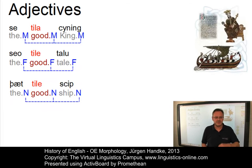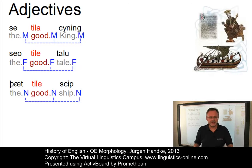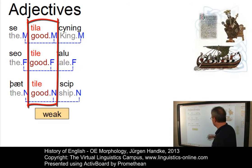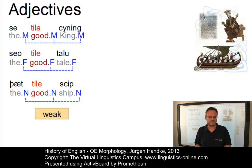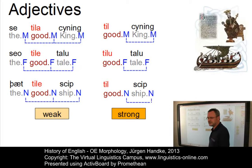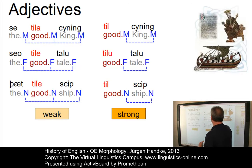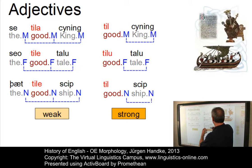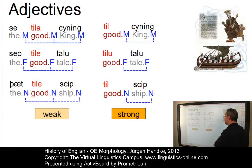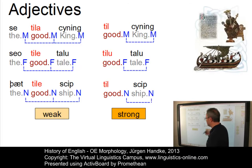Furthermore, adjectives can also take comparative and superlative endings. And this is the most remarkable thing in Old English: adjectives preserve the Germanic principle of two separate declensions. The so-called weak declension, where the adjective occurs in the context of a determiner. And then there is the so-called strong declension, where adjectives can occur without determiners, and then special forms have to be used. So 'se tila cyning' is weak, while 'til cyning' — good king — 'tilu talu' — good tale — and 'til scip' — good ship — illustrate the strong adjectival declension.